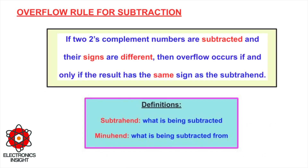Now, to understand the overflow rule for subtraction, let us define the terms: minuend and subtrahend. In the operation a − b, a is the minuend (what is being subtracted from) and b is the subtrahend (what is being subtracted). The overflow rule for subtraction states: if two two's complement numbers are subtracted and their signs are different, overflow occurs if and only if the result has the same sign as the subtrahend.